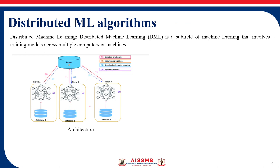So what exactly is distributed machine learning? It is a subfield of machine learning that involves training a model across multiple computers or machines. Distributed machine learning refers to the process of training machine learning models using multiple computing resources which are interconnected. This approach is designed to improve the performance, increase the accuracy, and scale to larger input data sizes.